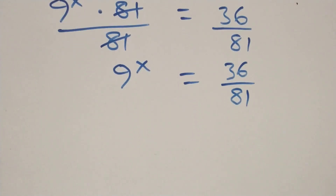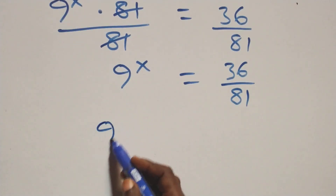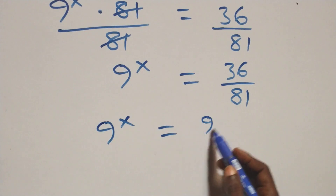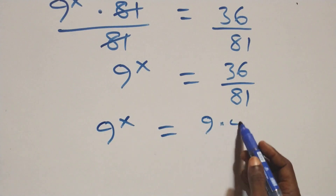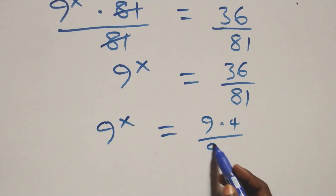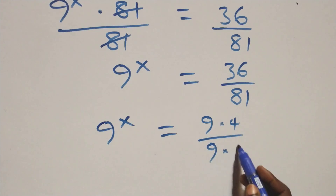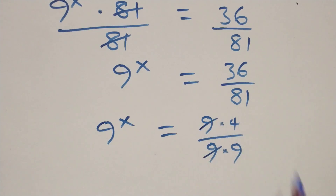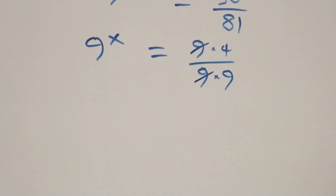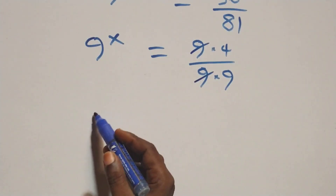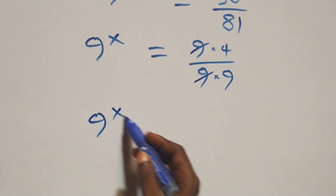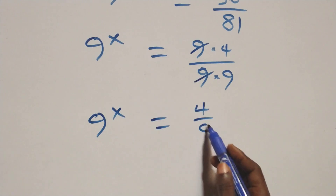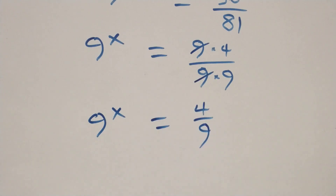The next step: 9 raised to power x equals 9 times 4 over 9 times 9. The 9s cancel each other, and we have 9 raised to power x equal to 4 over 9.